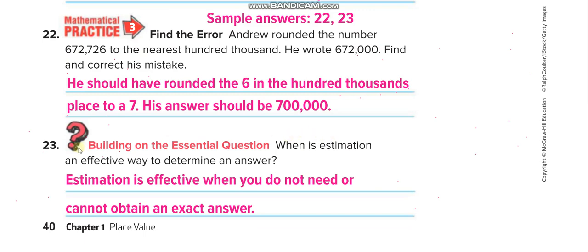When is estimation an effective way to determine an answer? Estimation is effective when you do not need or cannot obtain an exact answer. For example, in some division calculations where you cannot get an exact answer, we use estimation.